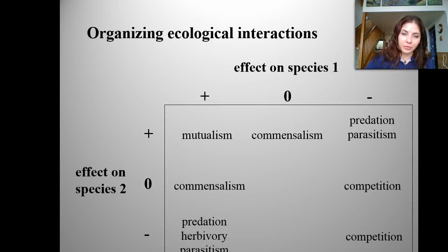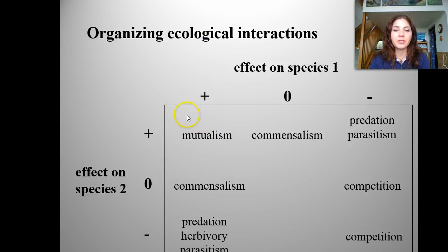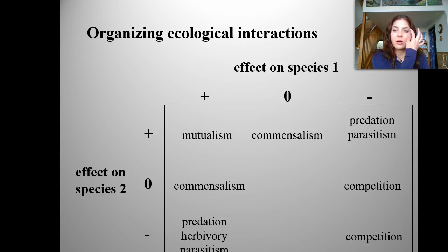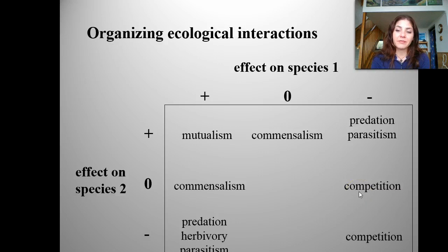In summary, the different symbiotic relationships: mutualism is a plus-plus — both members benefit. Commensalism — one benefits, and one is neither helped nor harmed. In both predation and parasitism, one is helped — the parasite is helped, and the predator is helped — and the other is harmed — the host is harmed, and the prey is harmed. In competition, we're going to have a negative-negative for both species.